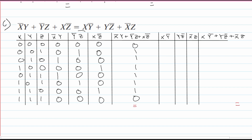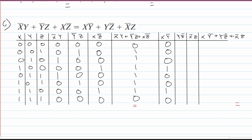Now we're going to do something similar for the three right-side columns. Remember, since x is 0 in the first four rows, those will all be 0 for x·not-y. If y is 1, because it's a not, it's going to be 0, otherwise it's a 1. I made a mistake looking at the wrong columns — this should be a 1 and this should be a 0.